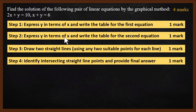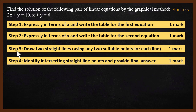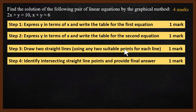Step 2: Express y in terms of x and write the table for the second equation. We repeat the exact same step for the second equation to get the second table. Step 3: Draw two straight lines. Use any two suitable points for each line — you don't need all the points. Pick whatever points you think are best and draw the line.